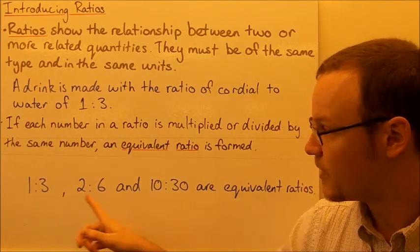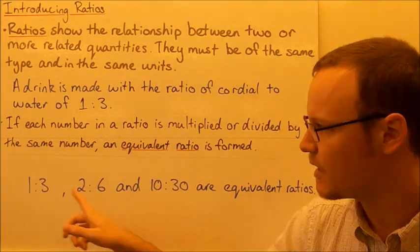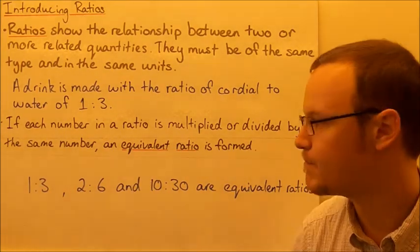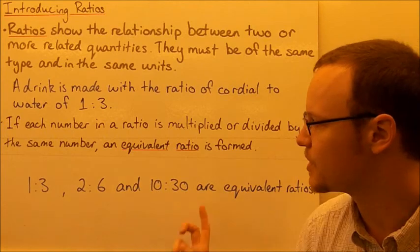To get from 1:3 to 10:30, we multiply both of those numbers by ten. One times ten is ten, three times ten is thirty.